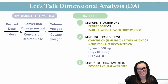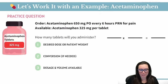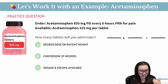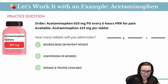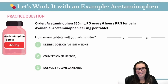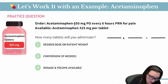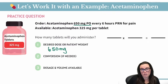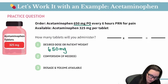So let's do some practice to pull this all together. Our first practice question: acetaminophen 650 milligrams PO every six hours PRN for pain. What we have available on the medication label is acetaminophen 325 milligrams per tablet. First, we ask ourselves what is our desired dose — we need 650 milligrams. Do we have to do any conversions? No, because our available dose is also in milligrams.